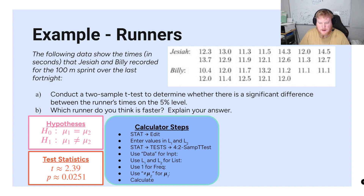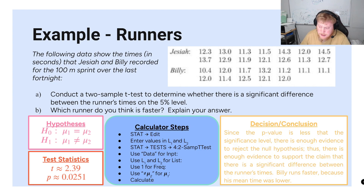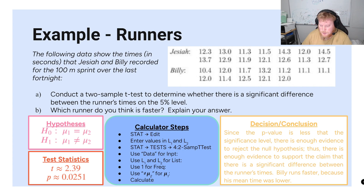That p-value of 0.0251 is less than the significance level of 0.05. Since the p-value is less than the significance level, there is enough evidence to reject the null hypothesis — thus there is enough evidence to support the claim that there is a significant difference between the runners' times.